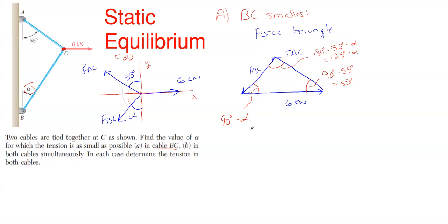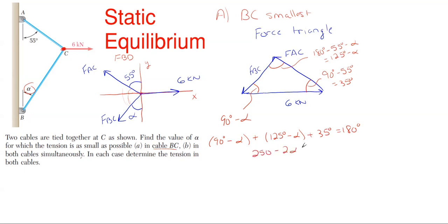Since the total triangle must add up to 180 degrees, we sum the three internal angles: (90° − α) + (125° − α) + 35° = 180°. Working through the math: 250 − 2α = 180, so −2α = −70, giving α = 35 degrees. That is our smallest angle possible for this system to remain in tension and in equilibrium.